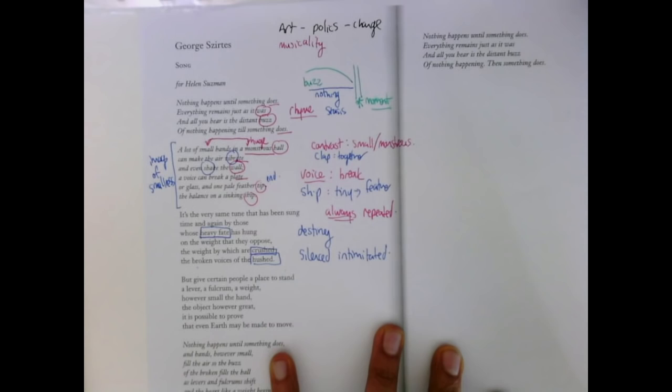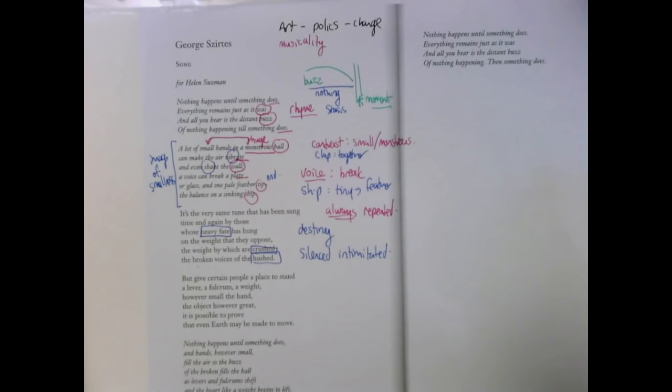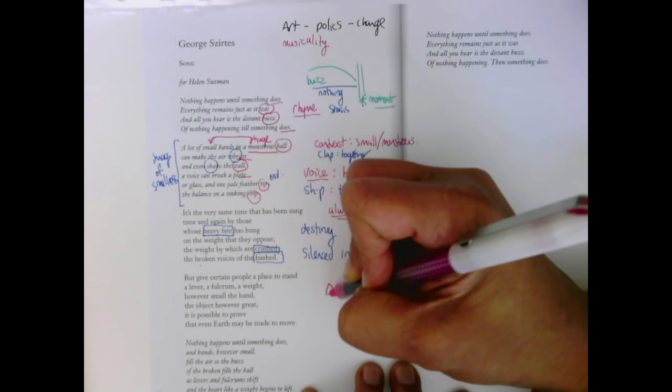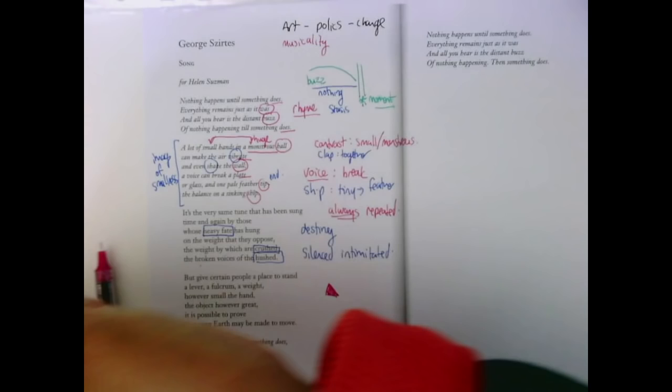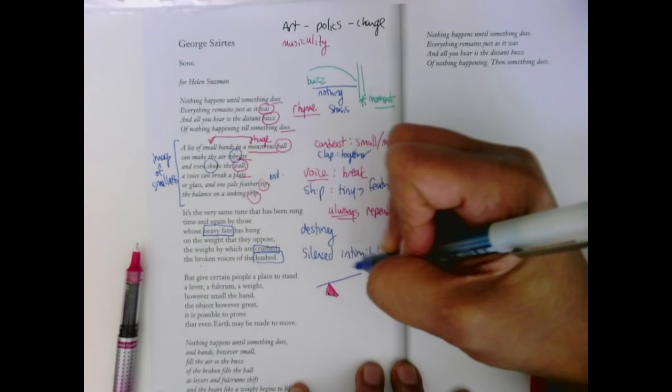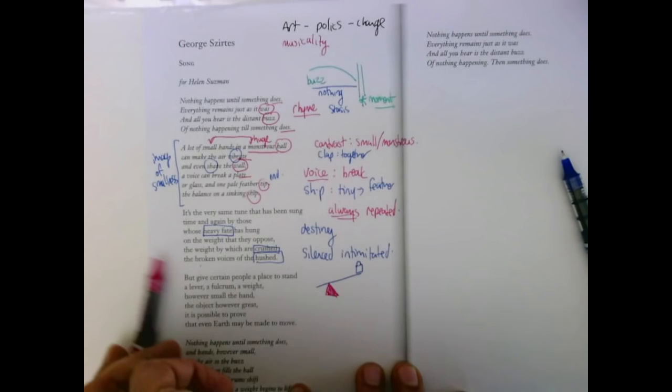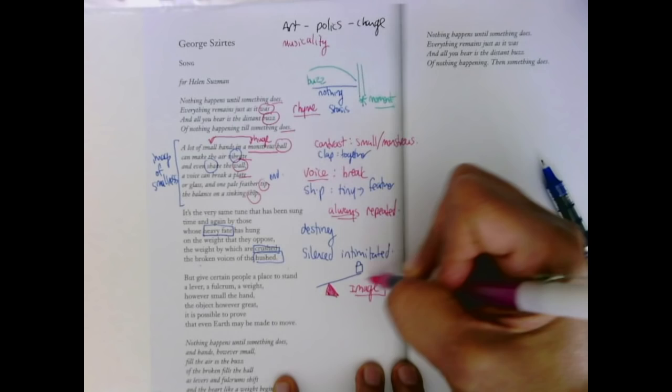And what idea is that? The idea is that give certain people a place to stand, a lever, a fulcrum, a weight. However small the hand, the object, however great, it is possible to prove that even earth may be made to move. Now, I can't remember what ancient Greek philosopher argued, it'll come to me in a second, but this is a fulcrum. And what he argued is, if you had a fulcrum, and you had a weight that was heavy enough, I'll put a little barbell there, you could move anything. And this image is what's being used here.